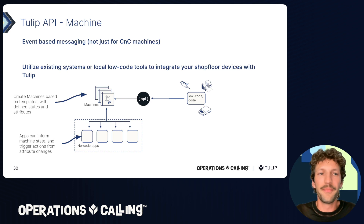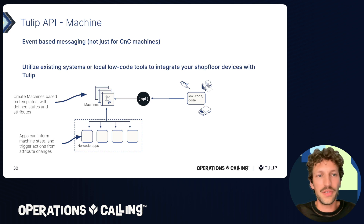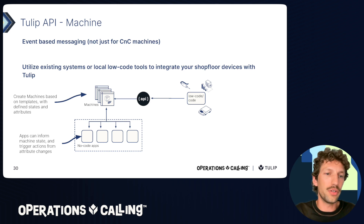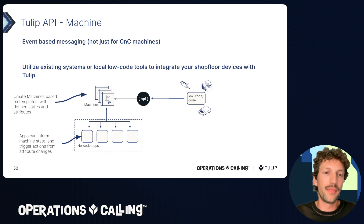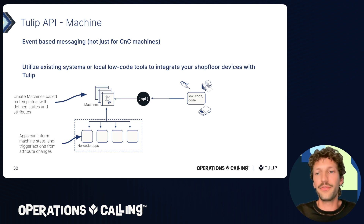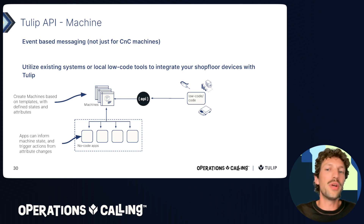Next is the machine API. Despite the name, this is event-based messaging that's not just for CNC machines — it can be used for devices, machines, or even alerts. Use your existing systems, low-code tools, PLCs, etc. to integrate existing shop floor devices with Tulip without duplicating effort. Within the application, you define a machine, its state, and its attributes — for example, weight for a scale, torque values for a tightening tool, or feed rate for a CNC. Then use the machine API to send real-time updates to those attributes.